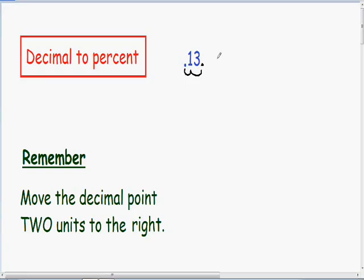After you move the decimal point two units to the right, the point becomes 13. And also, after you move the point two units to the right, the decimal becomes a percentage.